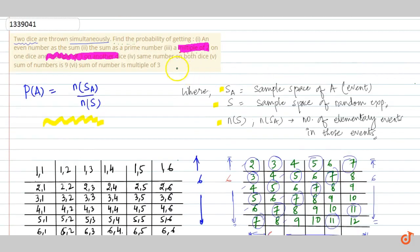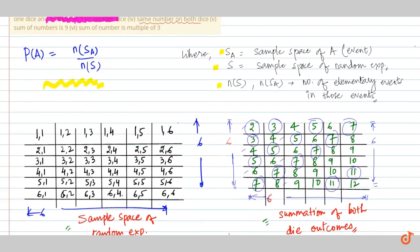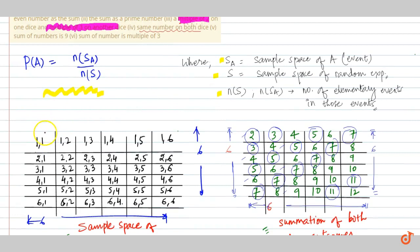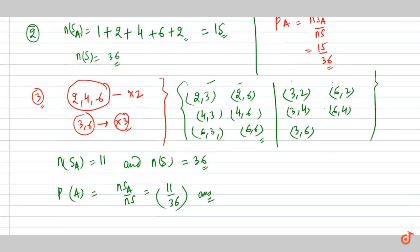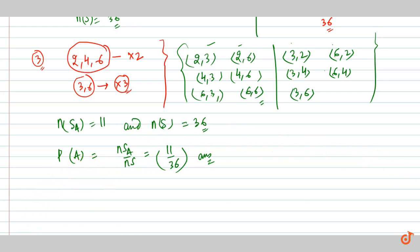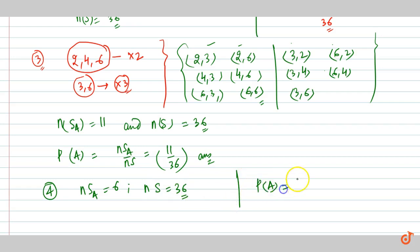Moving on to the next part which says the same number on both dice. We can clearly count them: (1,1), (2,2), (3,3), (4,4), (5,5), and (6,6). No other outcome will satisfy this result, so n(SA) equals 6. With n(S) equal to 36, the probability is 6 upon 36, which equals 1 by 6.